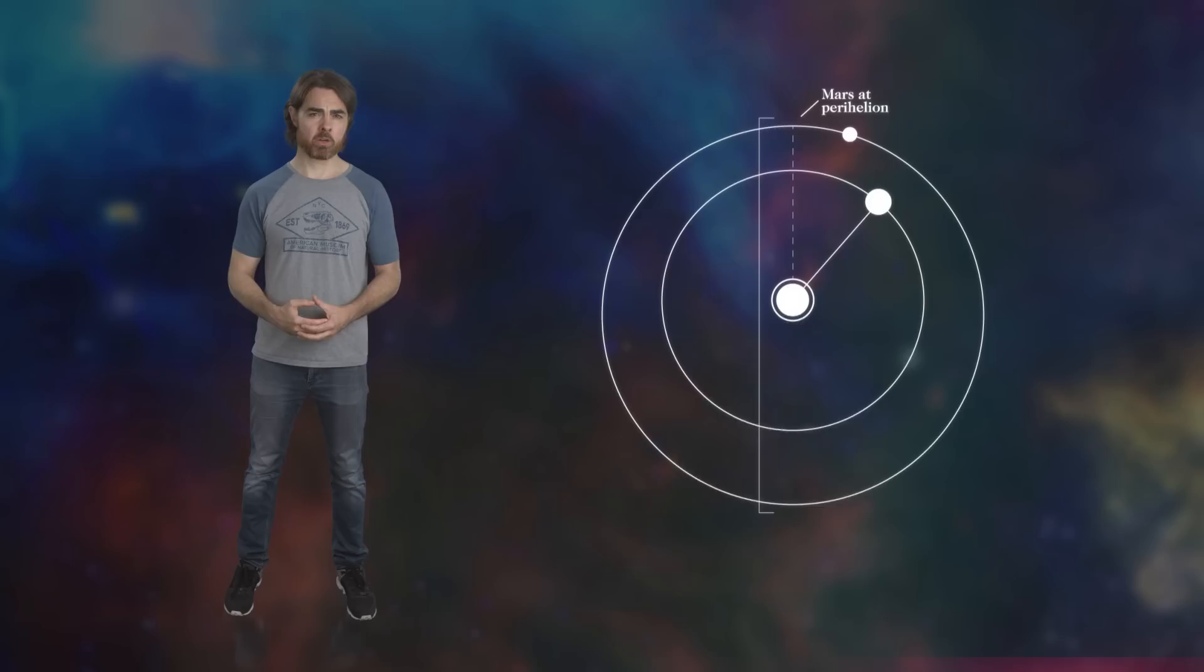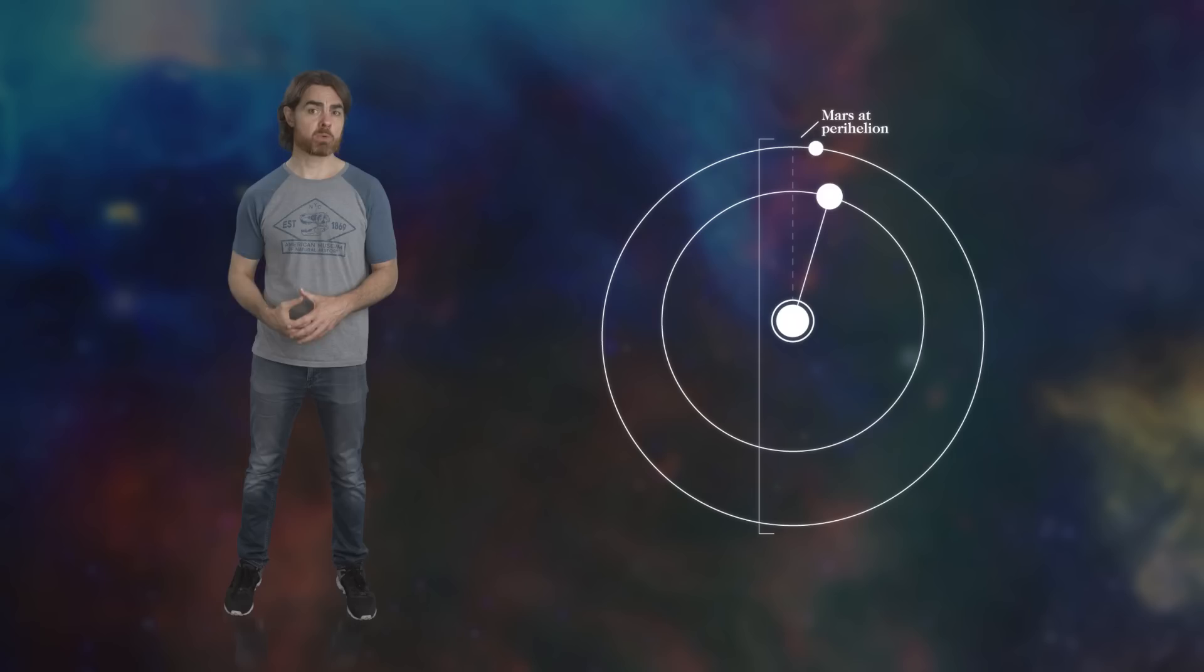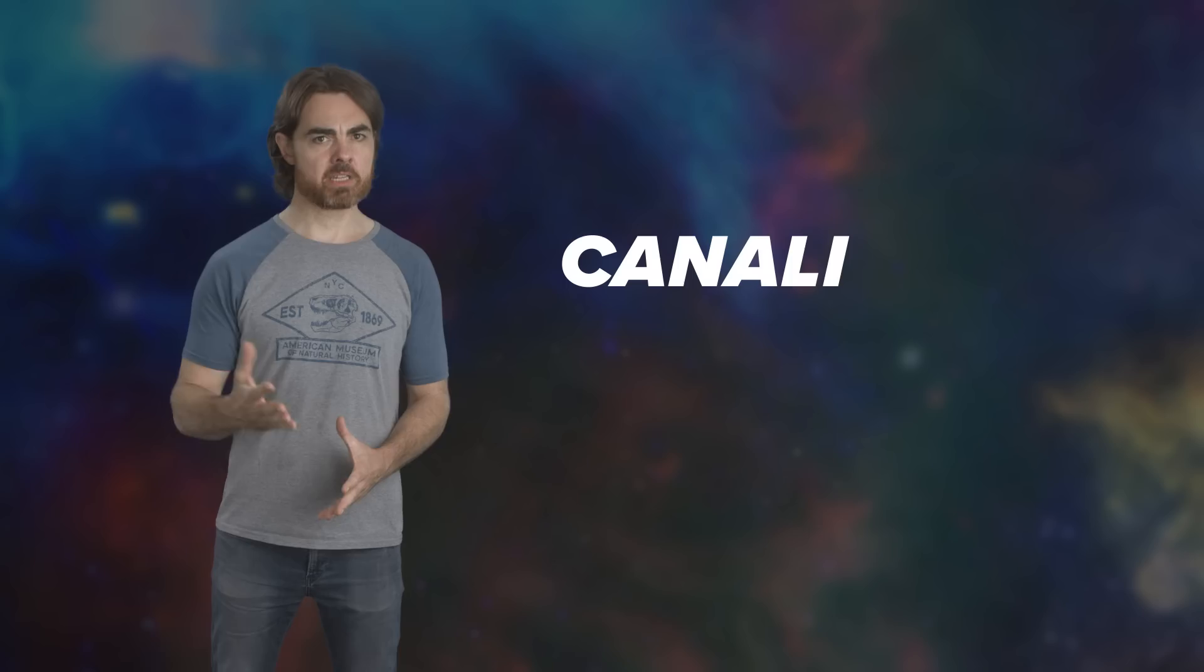Fast forward to 1877. Giovanni Schiaparelli was studying Mars during its perihelion opposition—that's the configuration that also just passed recently. Mars was at its closest approach to the Sun and the Earth at its closest to Mars.